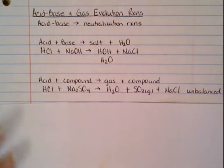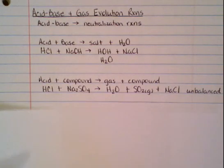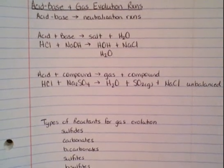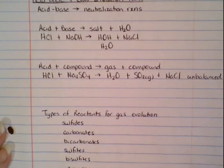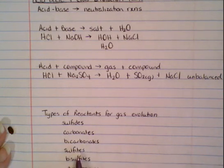Now, how do you know if you're going to form a gas? Well, there are a number of types of reactants that give you a gas evolution. The main ones that we're going to be concerned with are the sulfides, the carbonates, the bicarbonates, the sulfites, the bisulfites, and running off the page down here is ammonium.